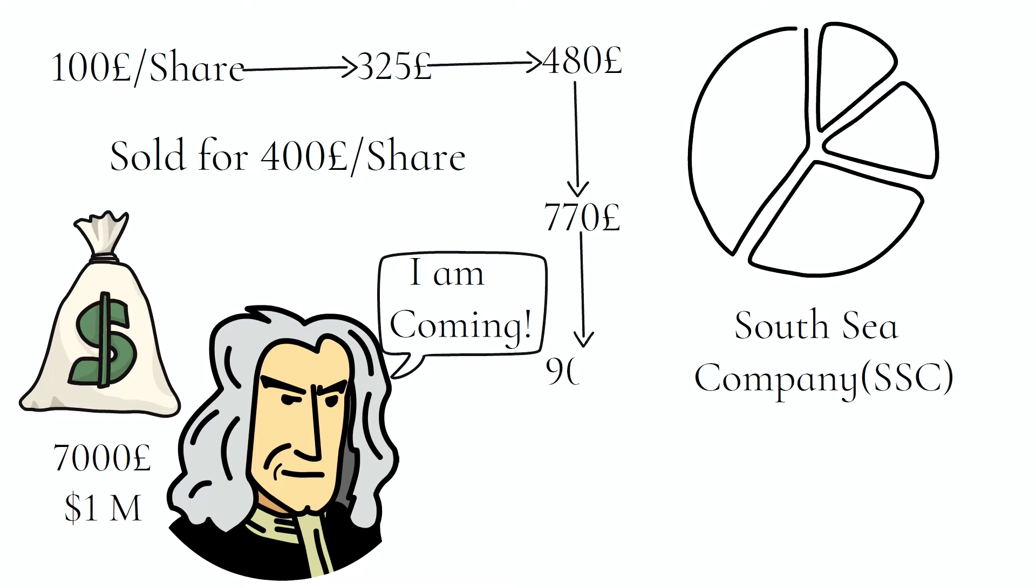By August, SSC shares were around 900 pounds. Remember, he bought first at 100 pounds per share, sold at 400 pounds, profiting 300 pounds per share. Now he is again buying back at 900 pounds per share.